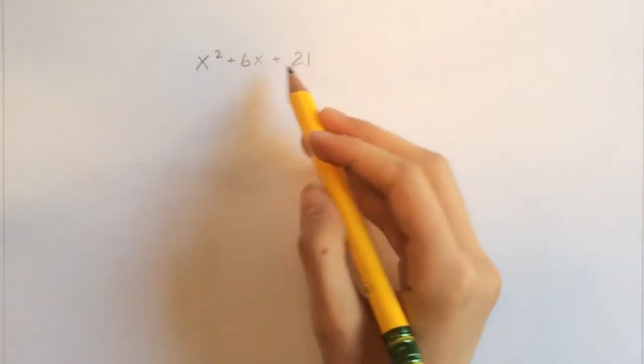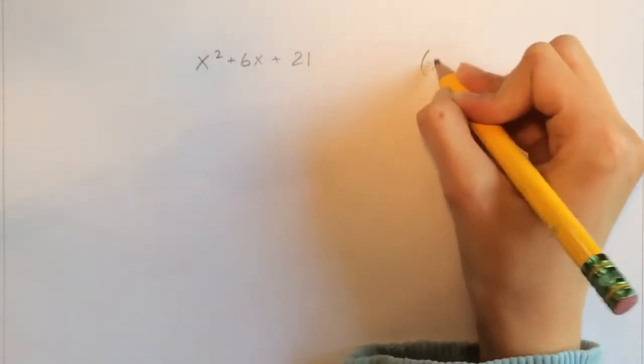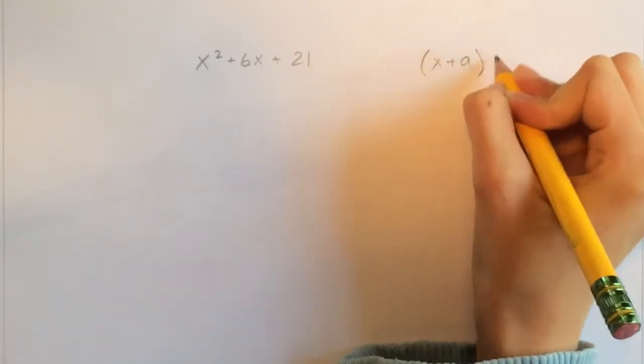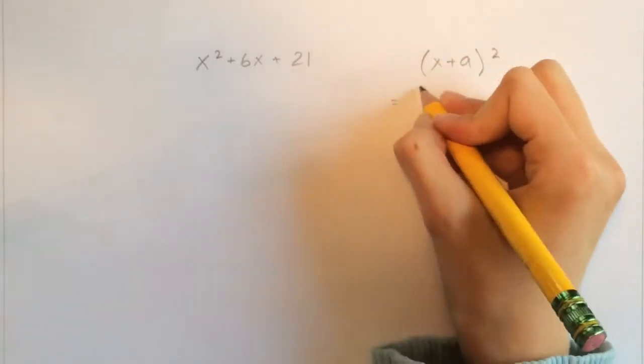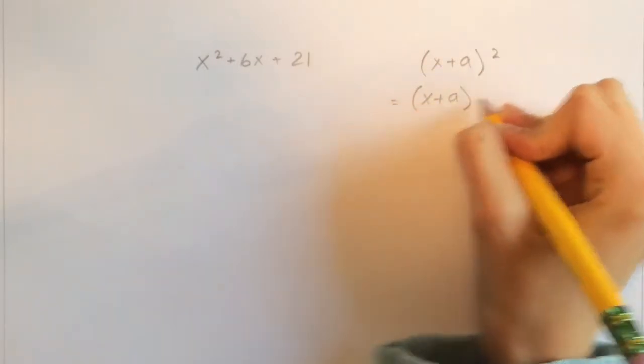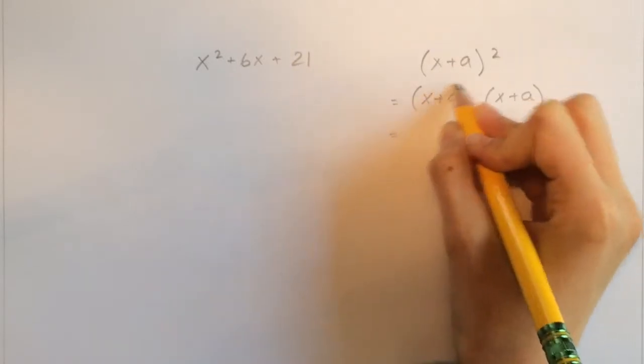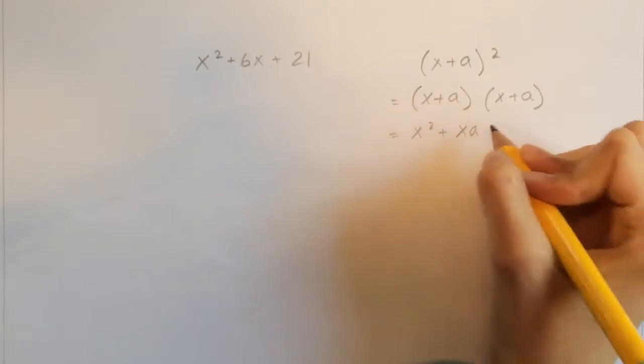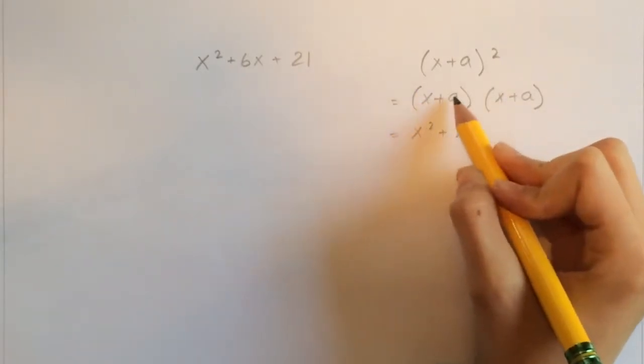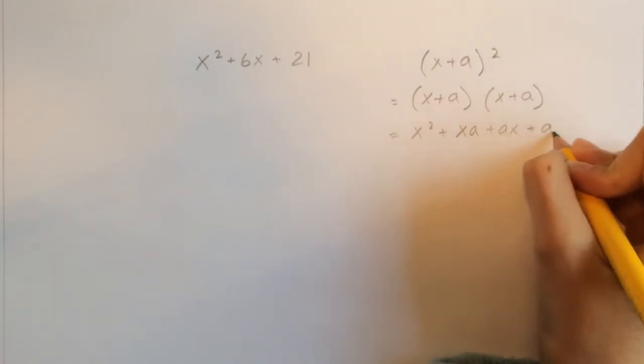We want to change this into something that is in the form of (x+a)². We know that (x+a)² equals (x+a) times (x+a), and that equals x² + xa, or ax, plus ax plus a².